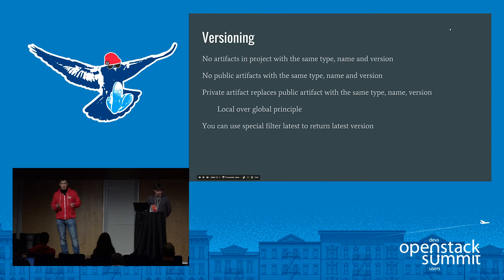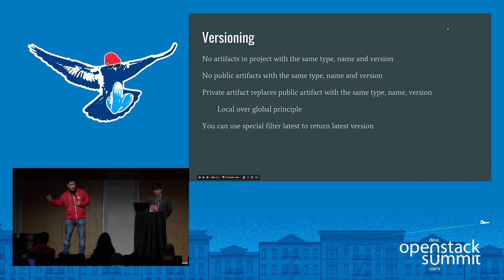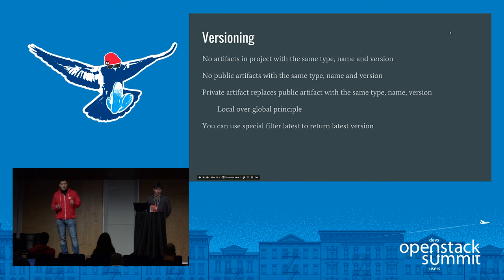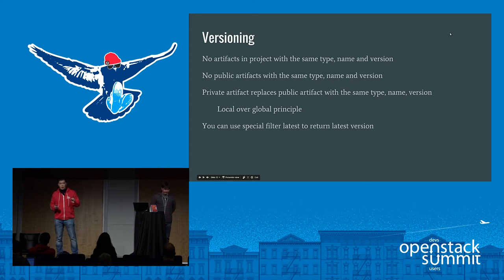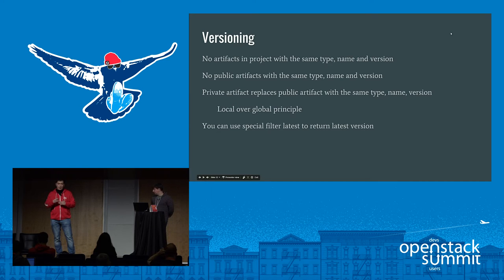If an artifact is immutable, how can we deliver a change? To support this case, we implemented versioning. Versioning allows users to ensure that there will be only one artifact with a specific type, name, and version. We introduced several scopes where the artifact must be unique. The first scope is private — you can create an artifact with the same name, type, and version within a Keystone project. The second scope is public — you cannot create any public artifact with the same name, type, and version. If there is a contradiction between private and public, private is returned first — like local over global in programming.